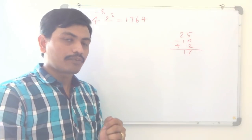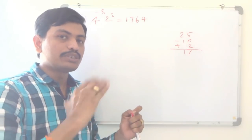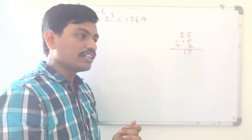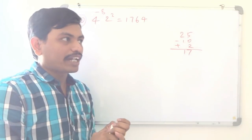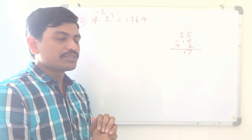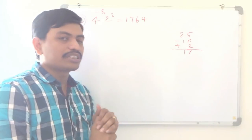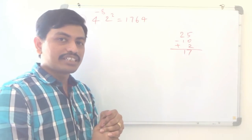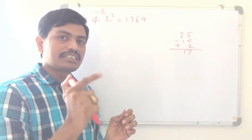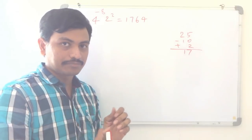Like this, we can find squares from 40 to 60 using the nearer-to-50 method. We can also use the same procedure to find the squares from 30 to 40, as well as 60 to 70.